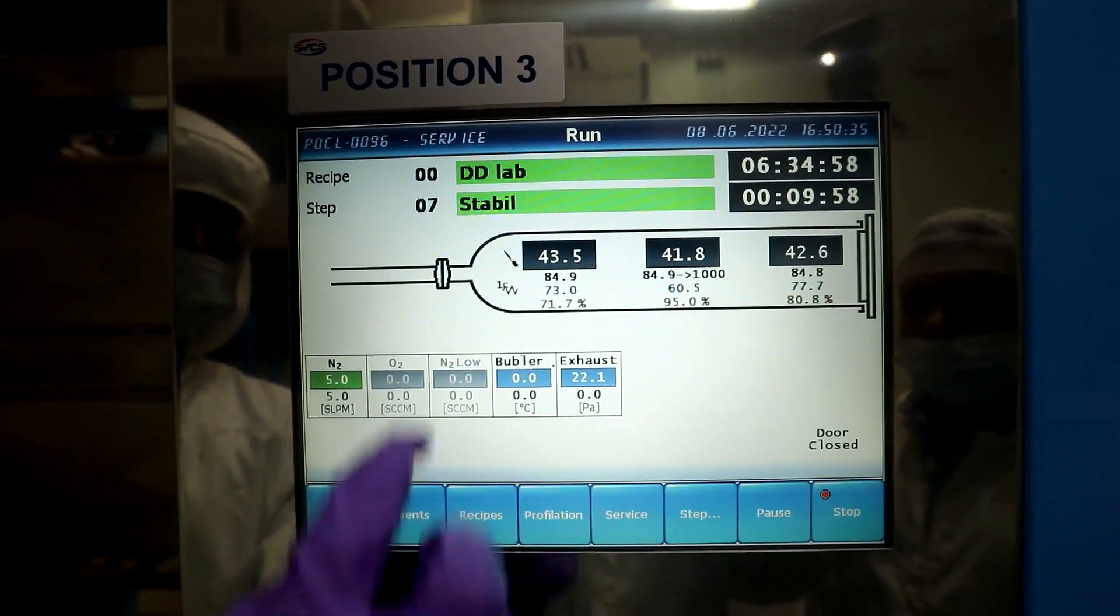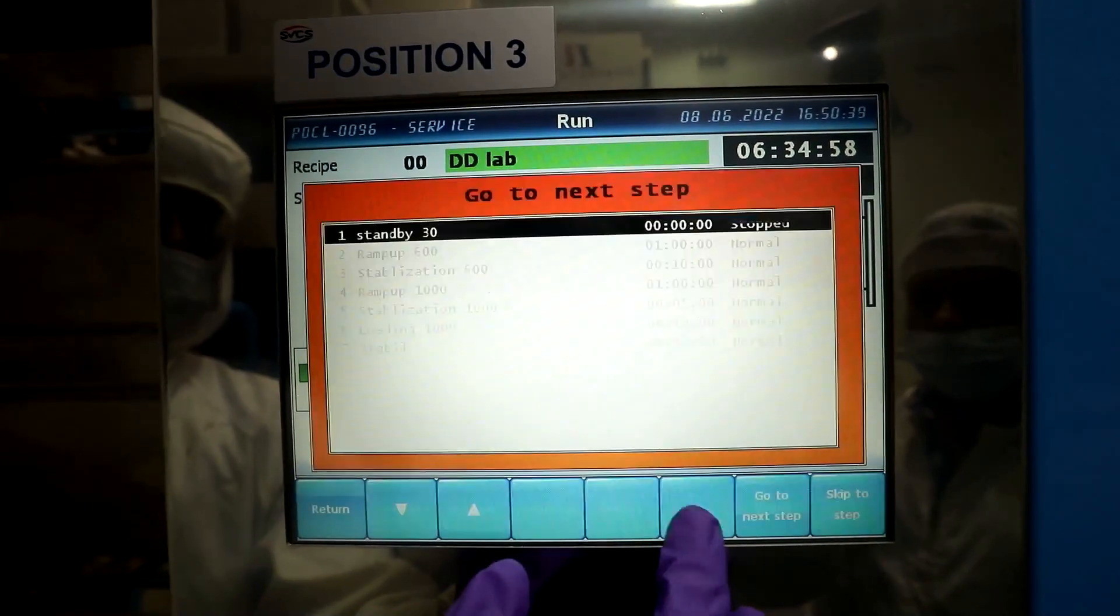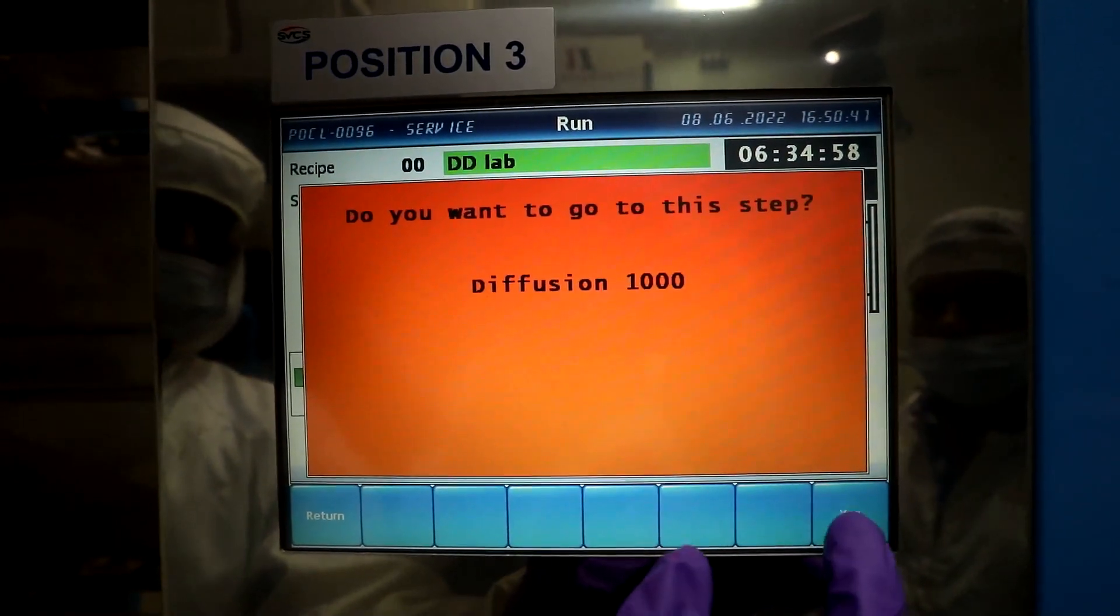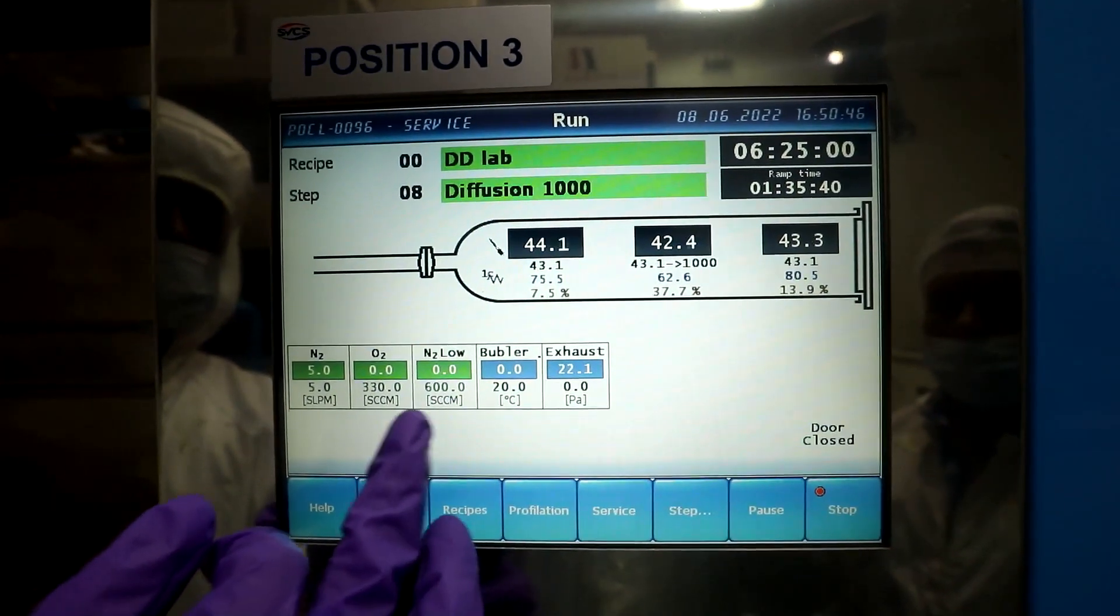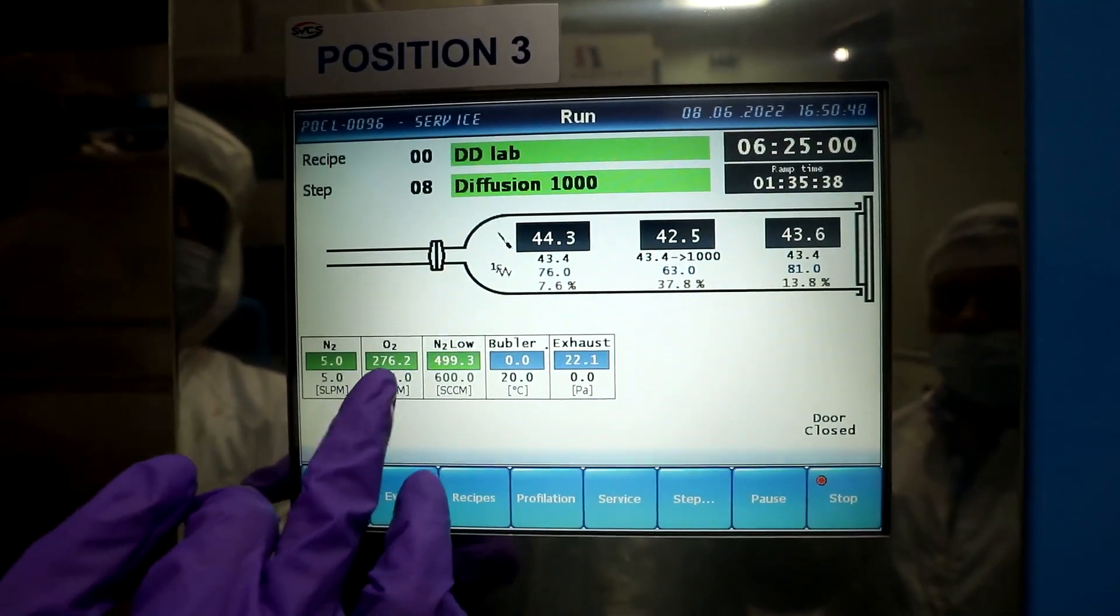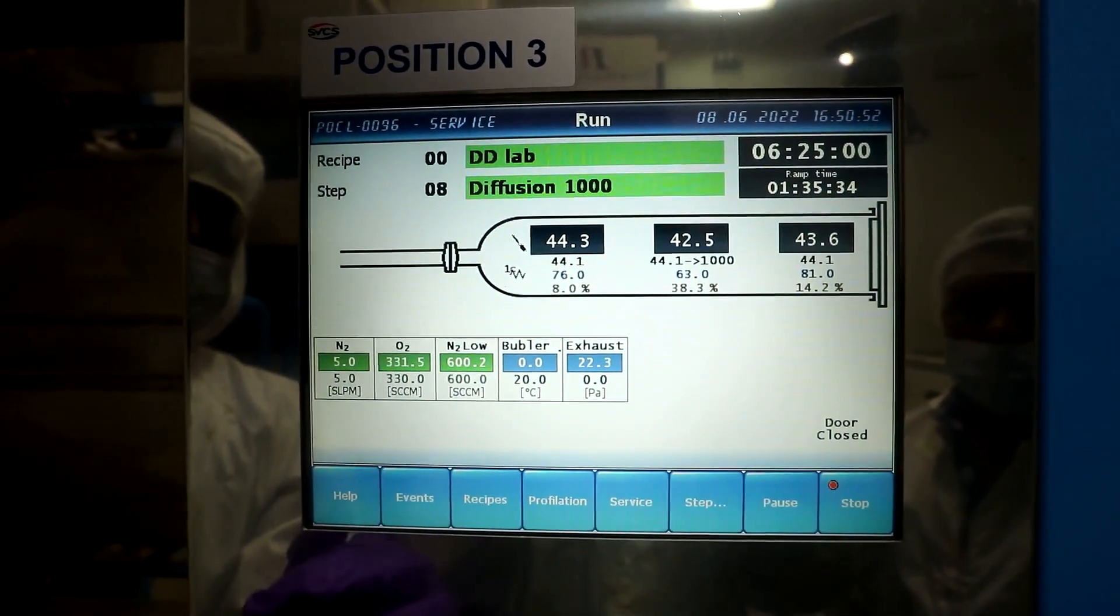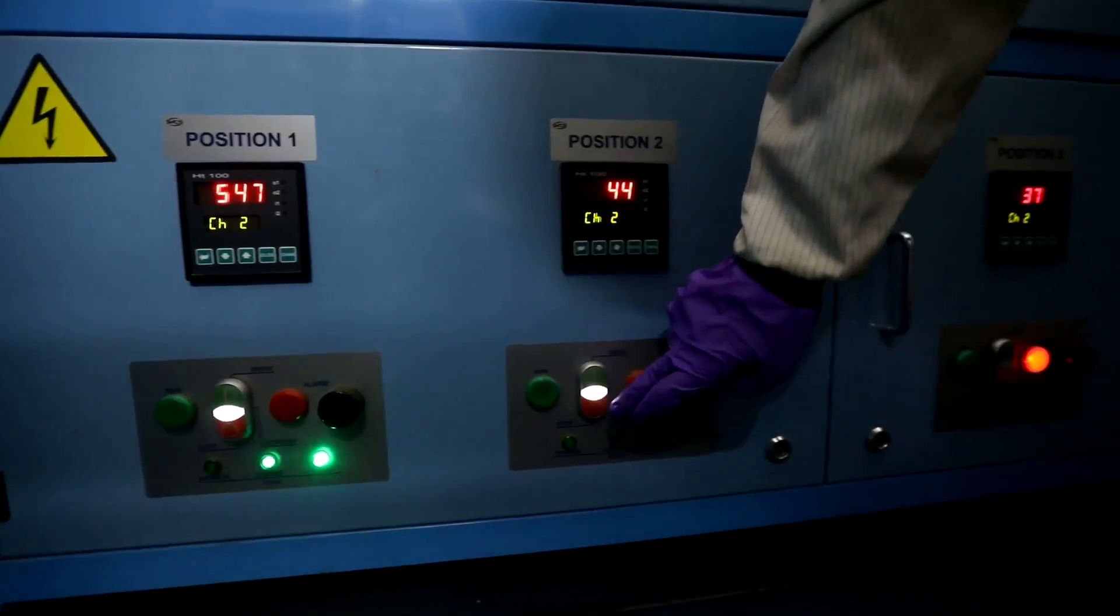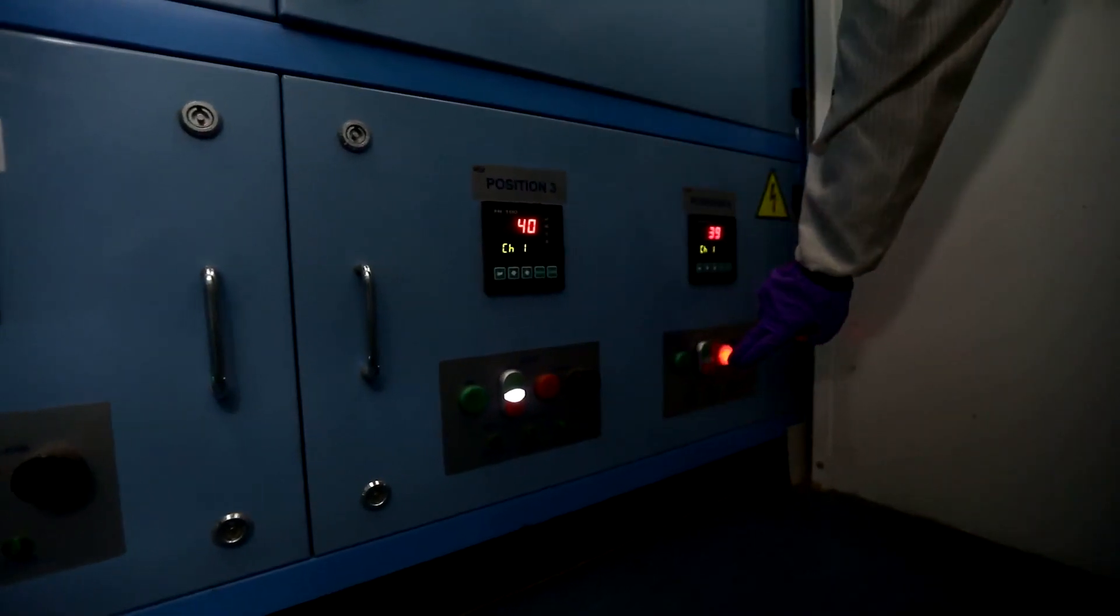Now let us start the diffusion process. The boiler contains the dopant source phosphorus oxychloride, POCl3. When the boiler is heated, the phosphorus is carried by the nitrogen gas inside the chamber. At the same time, oxygen is also passed into the chamber and both react with the silicon sample at 1000 degrees Celsius.